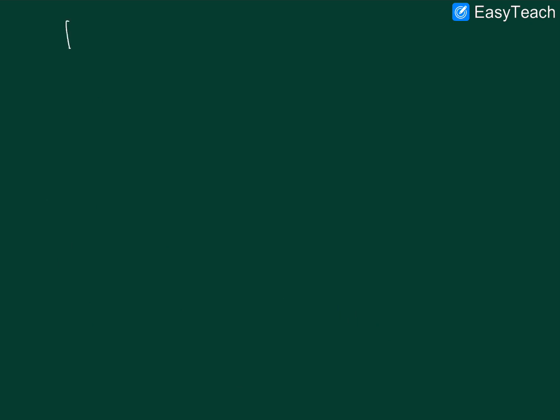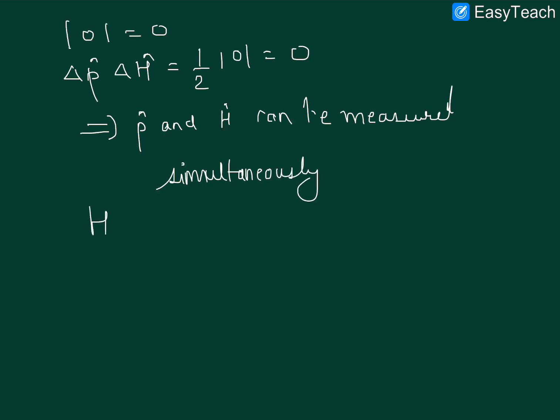So now modulus of zero is nothing but zero. So uncertainty in p and H cap equals half zero. This implies momentum and Hamiltonian can be measured simultaneously. Over here our Hamiltonian is nothing but the total energy of the system.